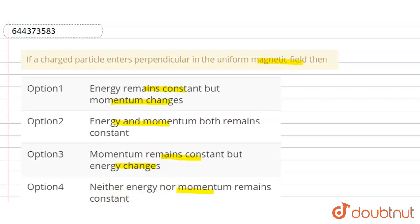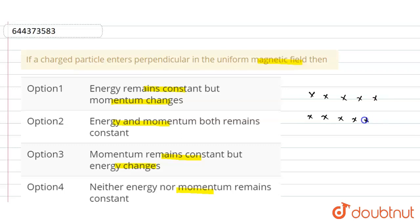As we know that in a uniform magnetic field, when a charged particle enters perpendicular, it starts moving on a circular path. Now suppose there is a magnetic field in which a particle enters perpendicular and so it circulates in a circular motion.